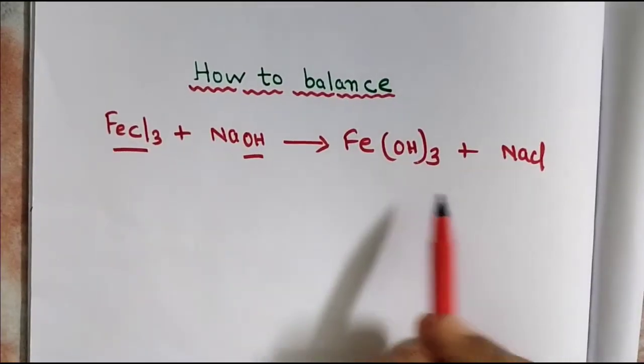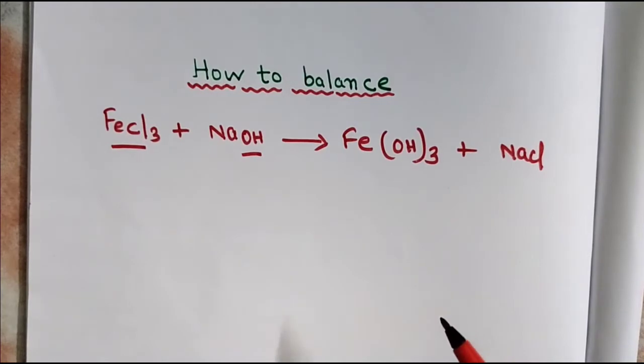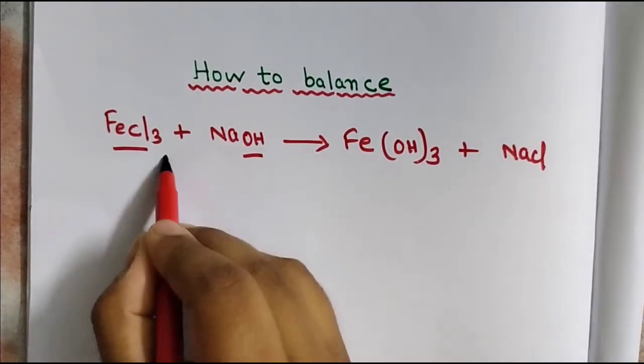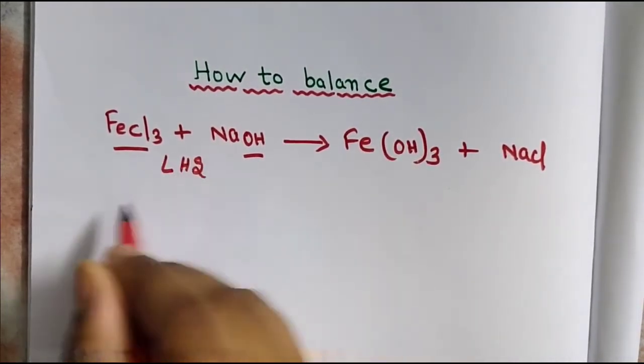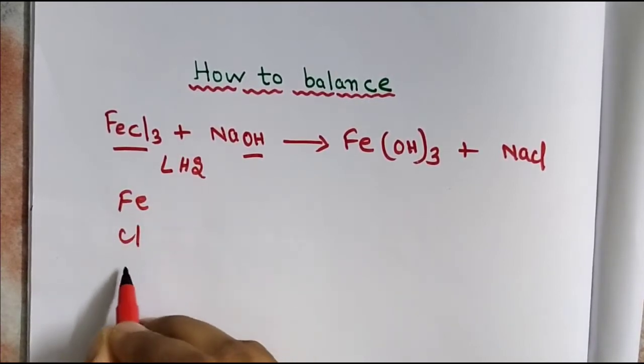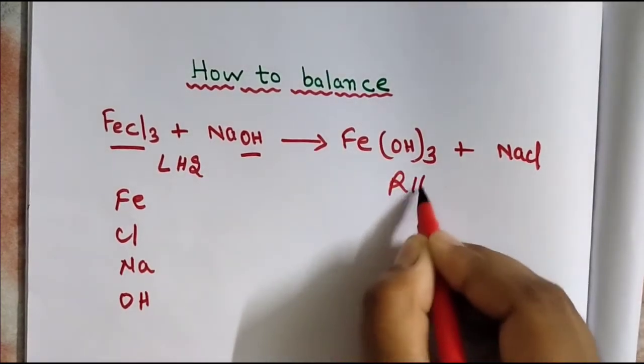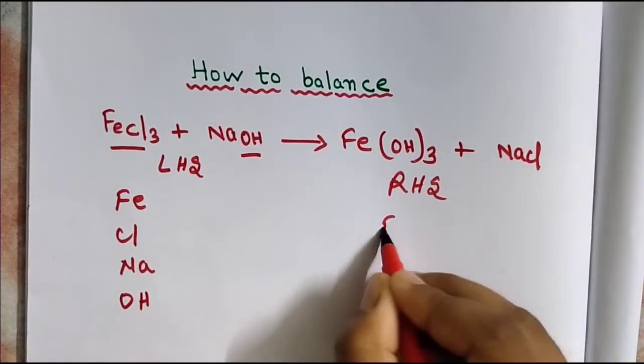To balance this chemical equation, first we need to count the number of atoms. For LHS: iron, chlorine, sodium, and hydroxide. I'm counting these to make it easy. For RHS also: iron, chlorine, sodium, and hydroxide.